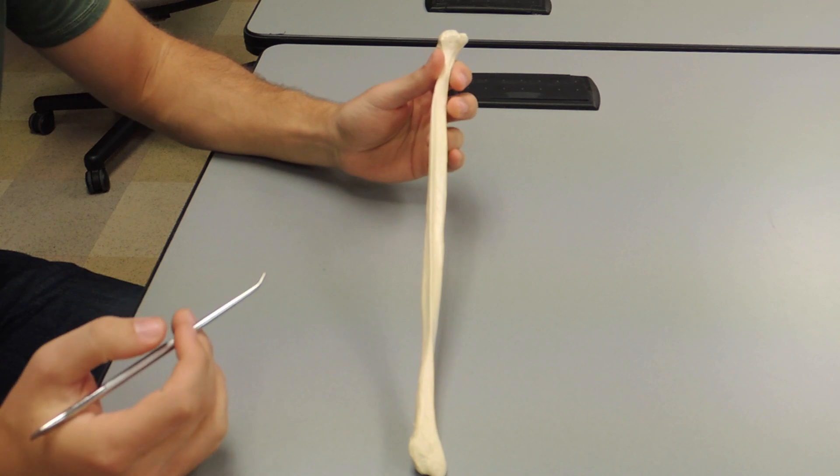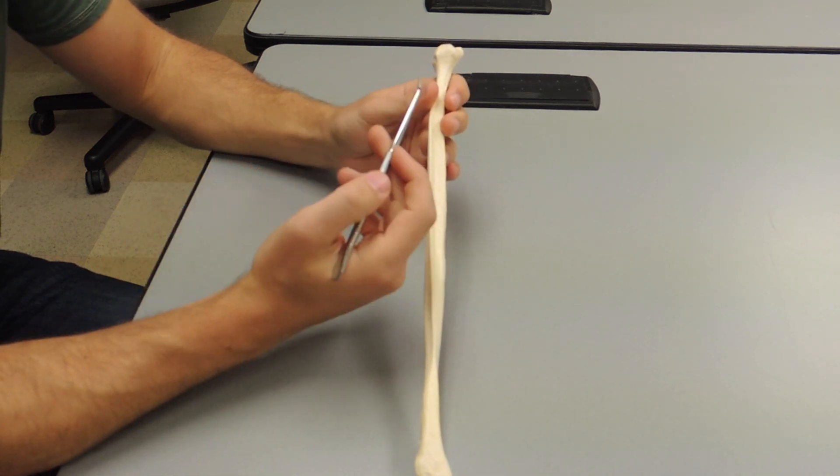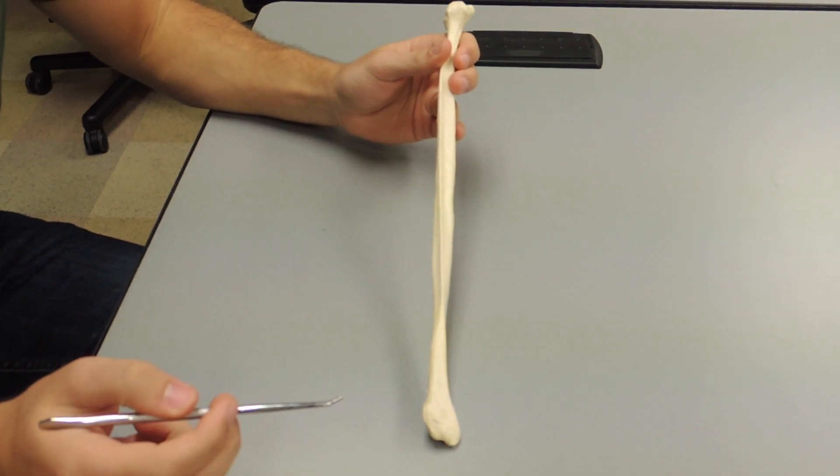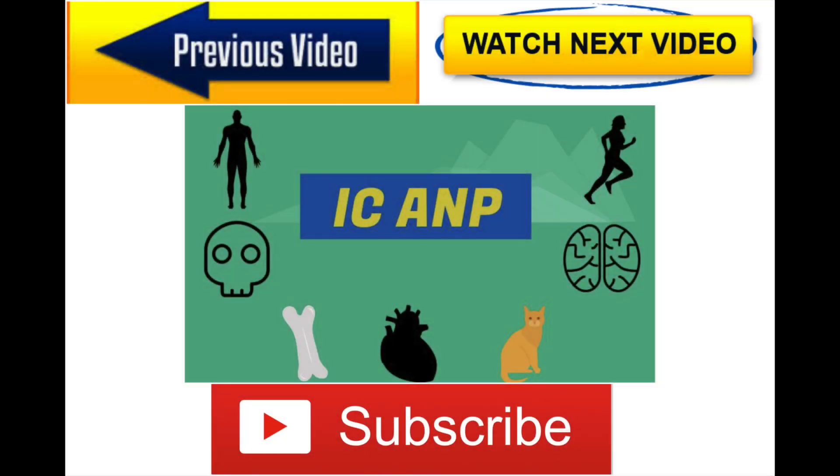So the fibula articulates with the tibia on the proximal end and on the distal end, it will articulate with the talus.